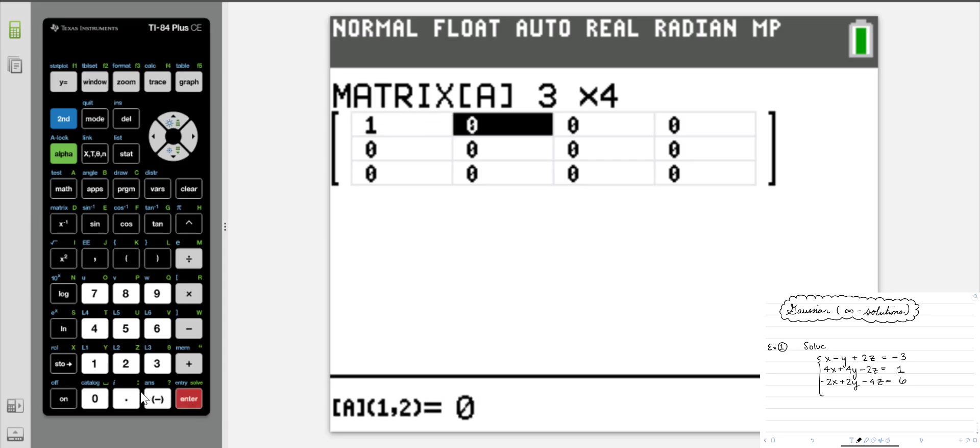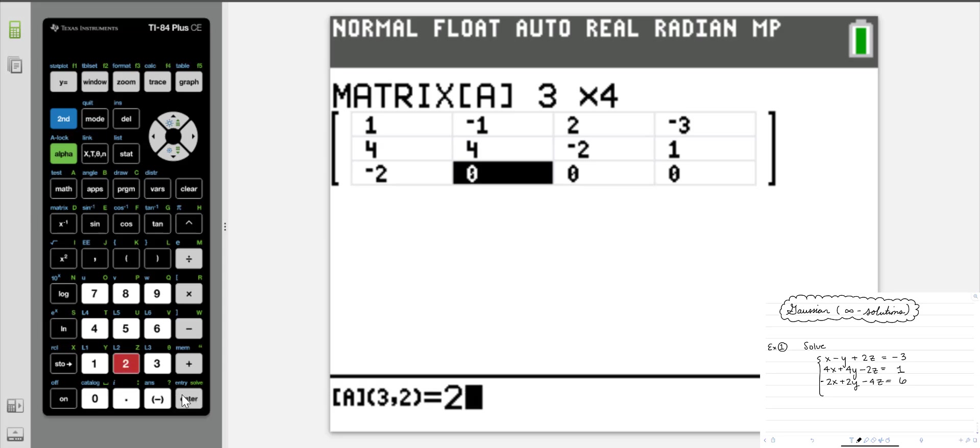We're going to enter in our entries left to right. So there's 1x, negative 1y. Make sure you're hitting the negative key down at the bottom instead of the subtraction key. Then we have 2z. Then we have negative 3. Then we have 4x, 4y, negative 2z, and then we have 1 for our constant. Then we have negative 2 for our x, 2 for our y, negative 4 for our z, and 6 for the constant.